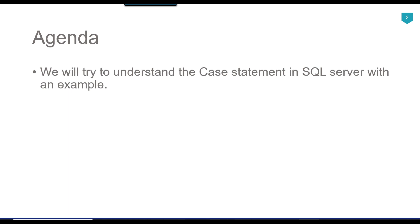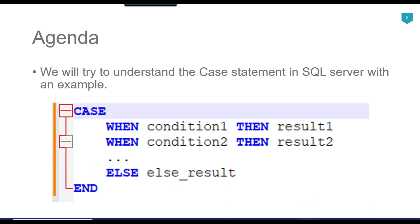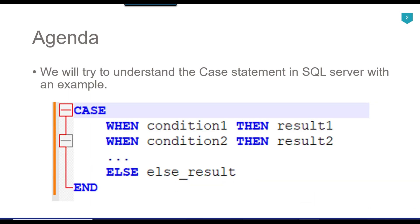In simple words, a CASE statement in SQL is like a decision-making tool. It helps you to check certain conditions and do something specific based on those conditions. It is very much similar to the if-else conditions in other programming languages. Think of it like decision-making choices: if this condition is true, then do this; if it is not true, check for another condition and do something else; and if none of the conditions are true, then do something by default.